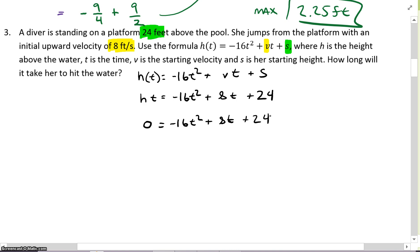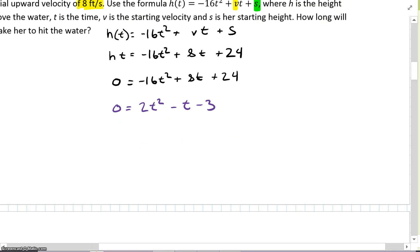I can divide everything by -8. Let's divide every term by -8. So I'm going to get 0 = 2t² - t - 3. Can we factor this? Absolutely. Let's just go ahead and do our x factor.